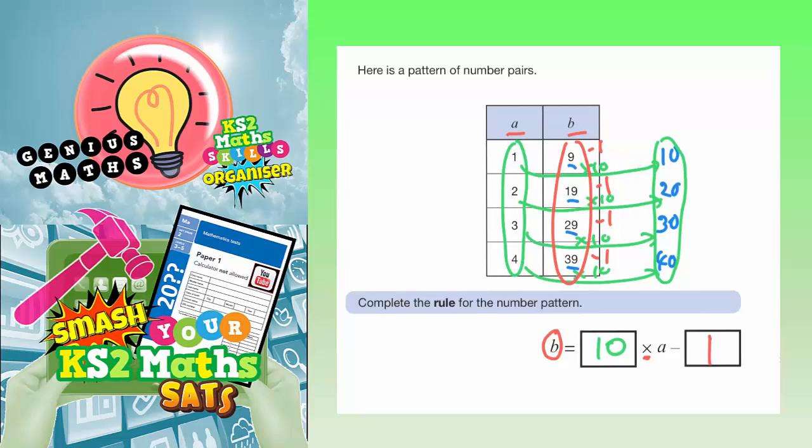So to summarise, if you start with A and you do 10 of the number, and then subtract 1, you get what B is. So A times 10, take away 1 equals B.